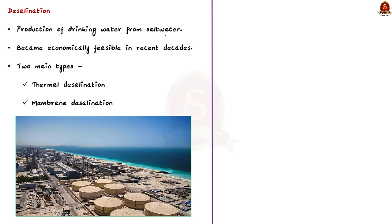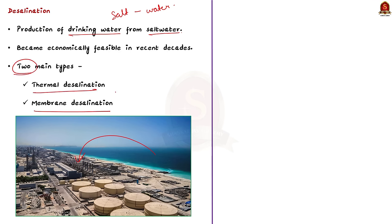Desalination is a process of removing salts from water to produce water that meets the quality requirement of human uses. It is a process of producing drinking water from salt water. Desalination plants are facilities that remove salt from seawater or brackish water. This process has been practiced for centuries but has become economically feasible in recent decades. There are two main types: thermal desalination and membrane desalination. Thermal desalination plants use heat to evaporate seawater so that they leave behind the salt. Membrane desalination plants use semi-permeable membranes to filter the salt from seawater.